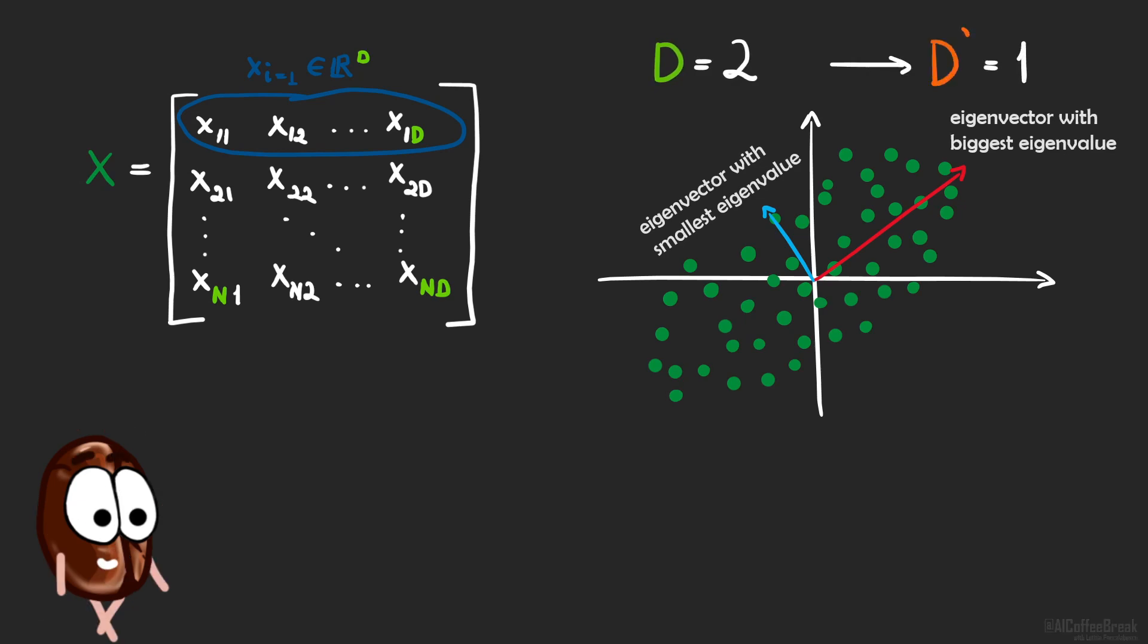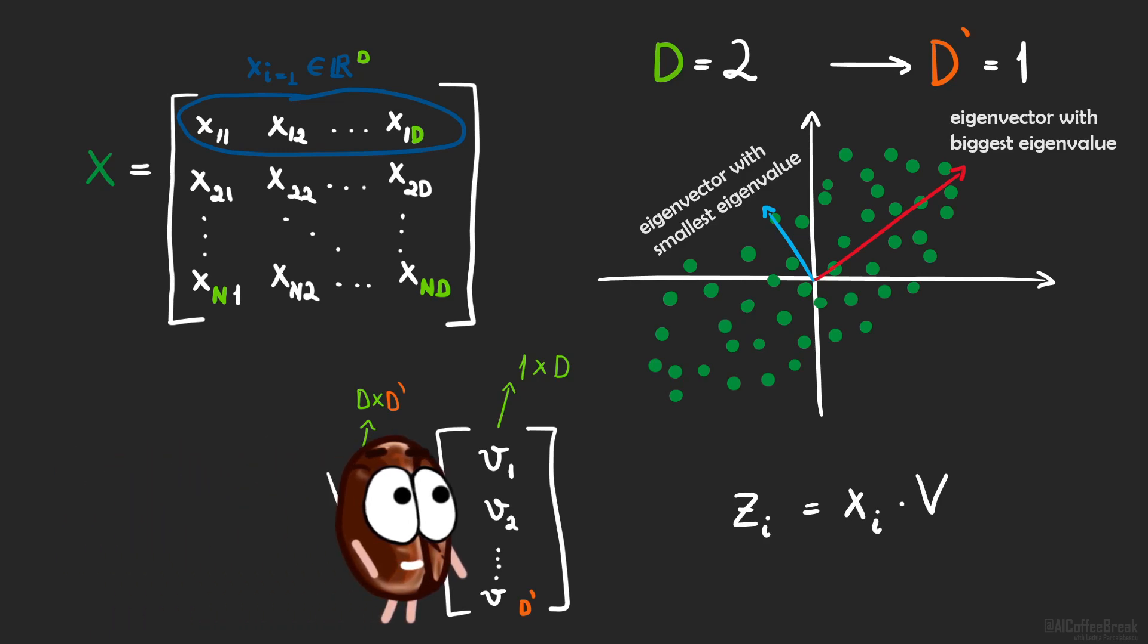For this, we decide on how many dimensions we want to reduce, say d prime. Then we take d prime eigenvectors and we put them into a matrix like this. The eigenvectors are d dimensional, since they live in the original space. And what we want then is to compute the new position z in the new space of our data points, like this.